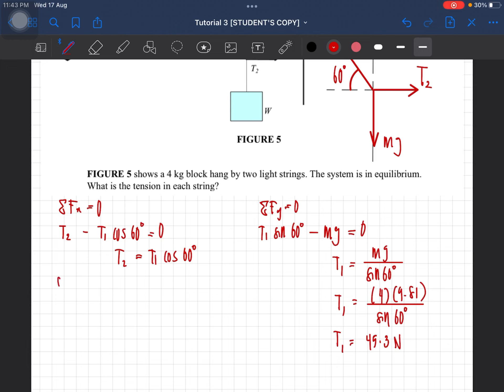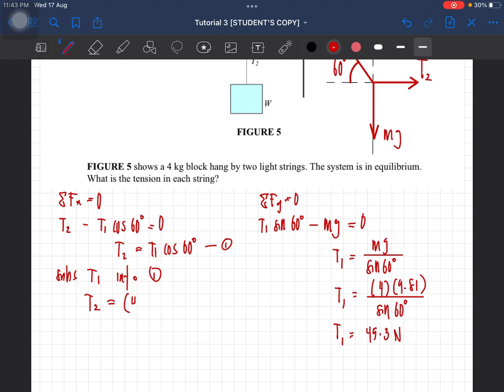So we can substitute T1 into equation 1. You will get then the tension in the second string. So that is 45.3 times with cos 60 degree.